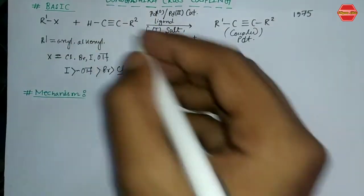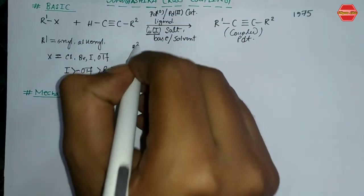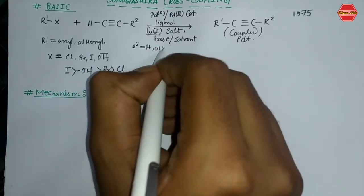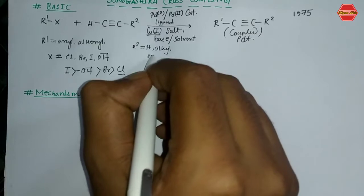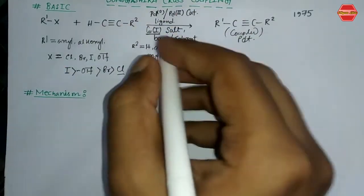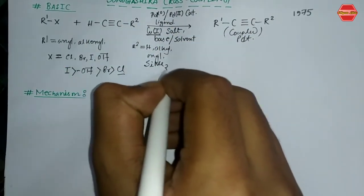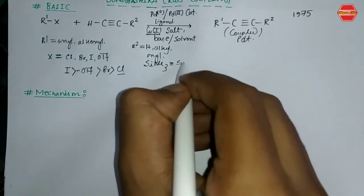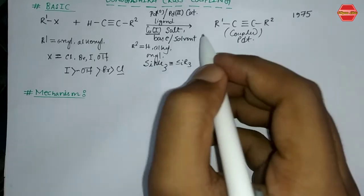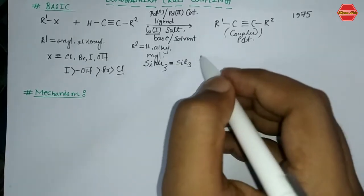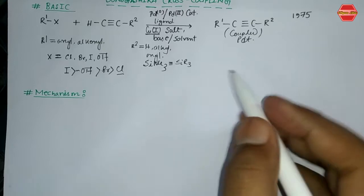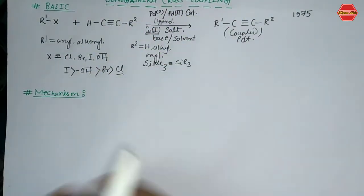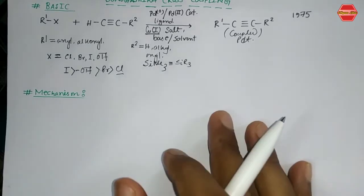The second coupling partner is the terminal alkyne. R2 can be hydrogen, alkyl, or aryl. The trimethylsilyl (TMS) group can also be used — it can be generalized as SiR3, so the R group can vary. This silicon compound can also be used in place of R2, and from these two partners we get the coupled product.